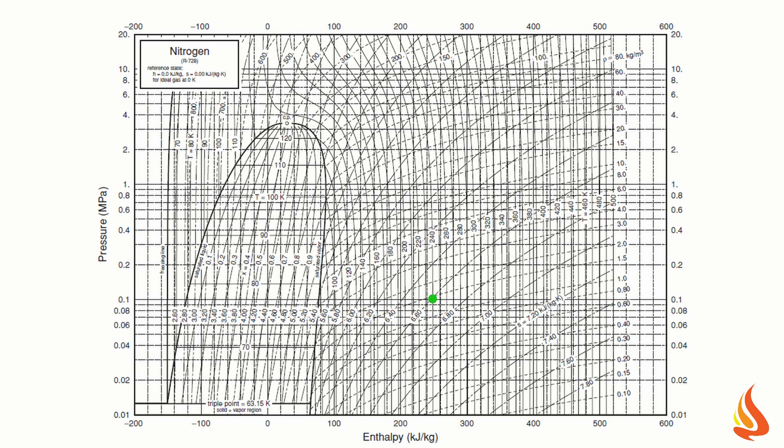Next, we locate the state that would be achieved if the compressor were adiabatic and reversible — this will be the pink dot on the diagram. We initially place the pink dot on top of the green dot, that is, at the initial condition. We then take the pink dot along a trajectory of constant entropy, stopping at the pressure of 0.4 MPa. We need the specific enthalpies of the states represented by the green and pink dots to calculate the power of the adiabatic reversible compressor.